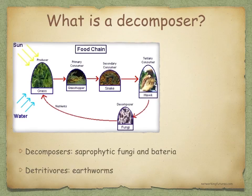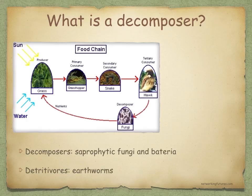When producers and consumers die, some energy is locked up in the complex organic molecules of which they're made. This energy is used by a group of organisms that break down these complex materials into simple components again. In doing this, they release valuable minerals and elements in a form that can be absorbed by plants, contributing to recycling. The majority of this work is carried out by saprophytic fungi and bacteria, which we call decomposers, and to a lesser extent by certain animals — for example, earthworms — which we call detritivores.